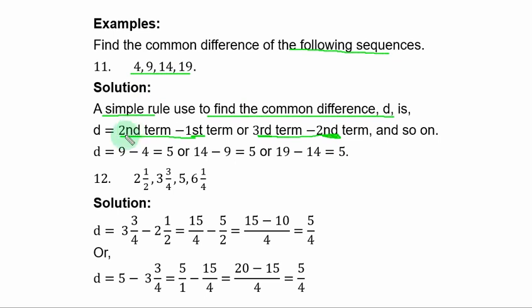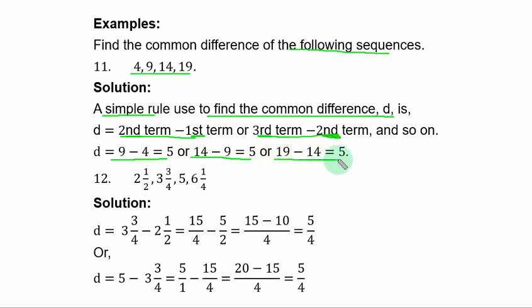For this sequence, the common difference D equals second term 9 minus first term 4, which is 5. Or third term 14 minus second term 9, which is 5. Or fourth term 19 minus third term 14, which is also 5. Whichever pair you choose gives the same result.